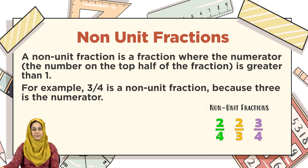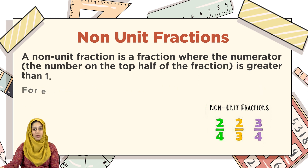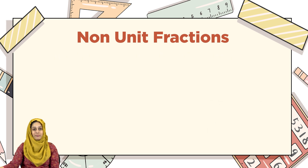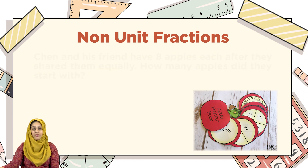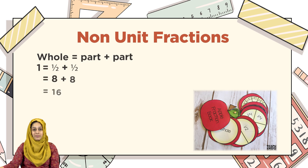Let's solve these word problems. Chen and his friend have eight apples each. After they shared them equally, how many apples did they start with? The answer is: three-eighths whole equals two parts. One shows half plus half, therefore eight plus eight equals sixteen.